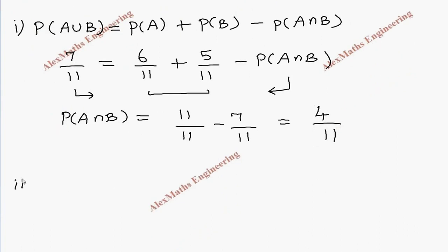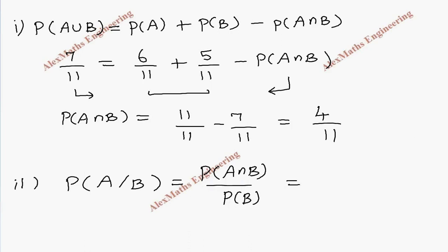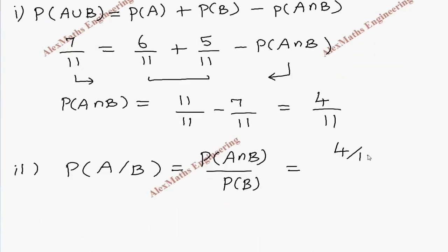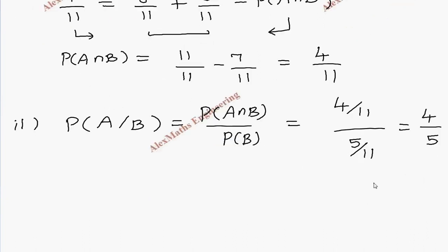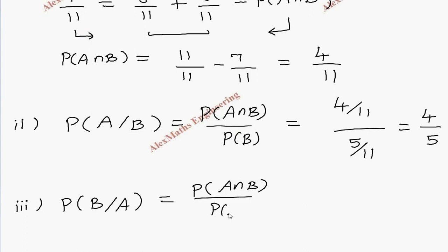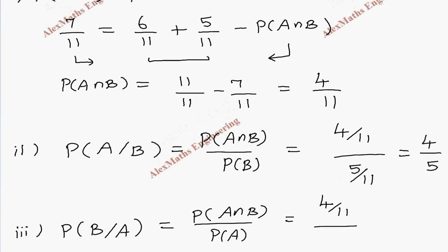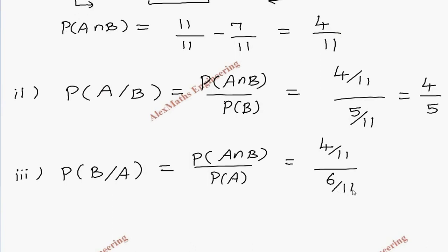In subdivision 2, they want P of A given B. The formula is P of A intersection B divided by P of B. A intersection B is 4 by 11 from the previous subdivision, and P of B is 5 by 11. After cancelling, we get 4 by 5. In the third subdivision, P of B given A equals P of A intersection B divided by P of A, which is 4 by 11 divided by 6 by 11. After cancelling and simplifying by dividing by 2, we get 2 by 3.